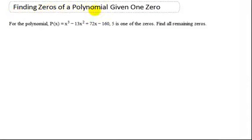In this video, we want to find the zeros of a polynomial given one zero of the polynomial. Here is my given polynomial. Notice the highest exponent on the x is a 3, so it's a cubic polynomial.